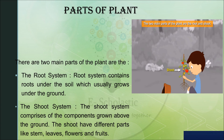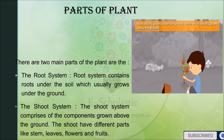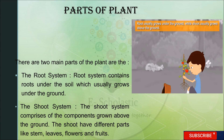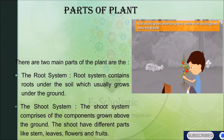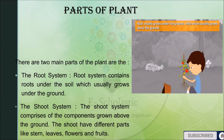The root system contains roots that grow under the soil, which is usually below the ground. The shoot system comprises the components grown above the ground. The different parts of the shoot system are stem, leaves, flowers, and fruits — all of which grow above the ground, while the root system comprises roots that grow under the soil below the ground.